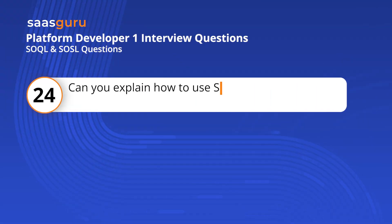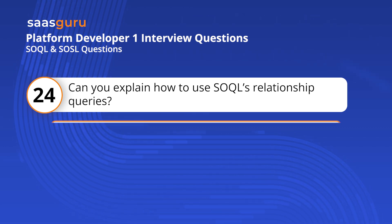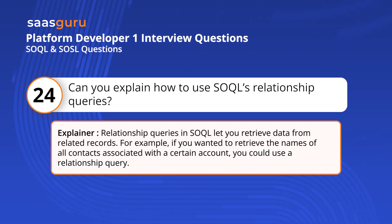Question 24: Can you explain how to use SOQL's relationship queries? Relationship queries in SOQL let you retrieve data from related records. For example, if you wanted to retrieve the names of all contacts associated with a certain account, you could use a relationship query.